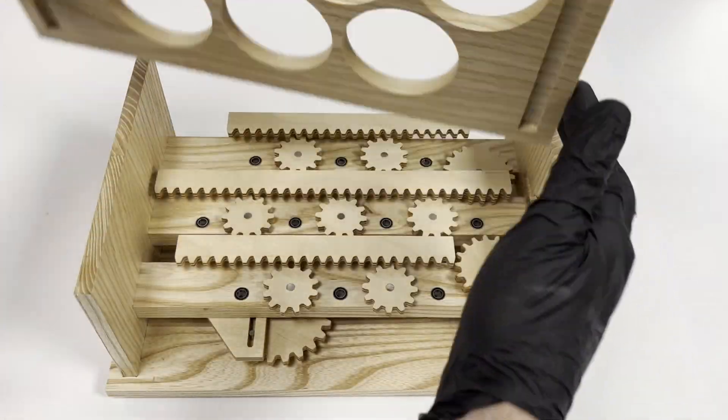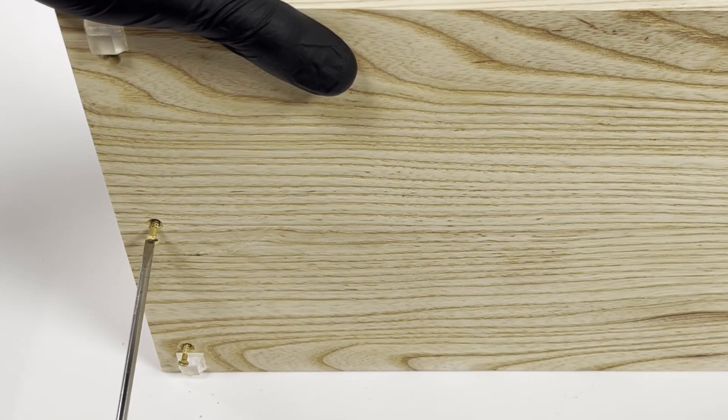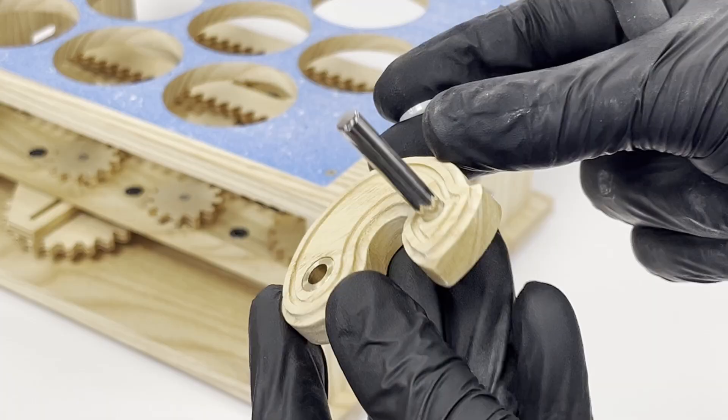Now I'm ready to install the top section of the box, which simply screws into place, and then fit the crank handle on the side secured with a grub screw.